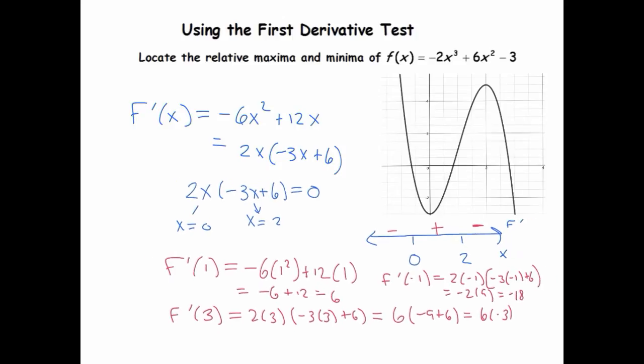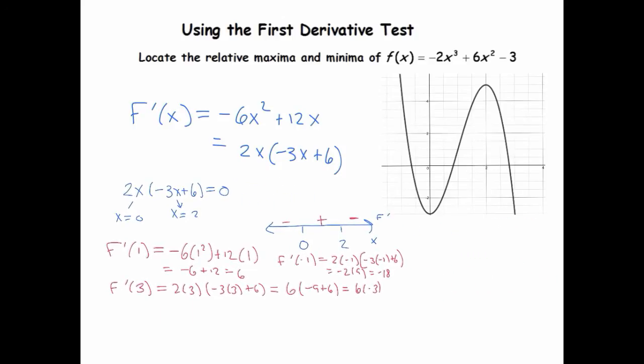All right, so that actually, no, I didn't really care about the values, but in this case, you kind of couldn't avoid finding them. So what did the question ask? It said, locate the relative max and min. So I definitely have a local min at 0, because the derivative changes from negative to positive. So that's a local min. And then I have a local max here at 2, because the derivative changes from positive to negative.